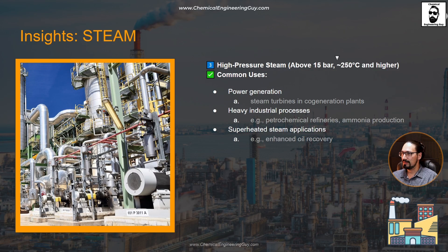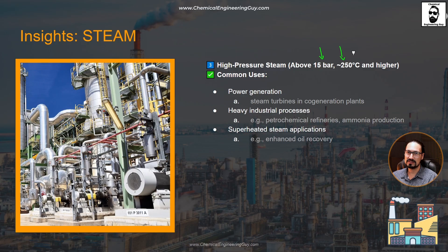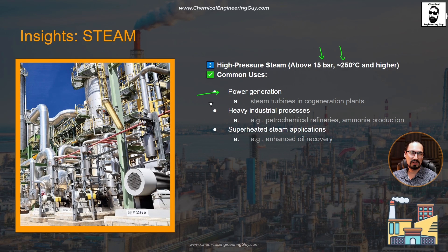Next, high pressure steam — high pressure and of course high temperature. Once again, this depends on the conditions of the industry, the processes, and the chemicals you're working with. This may certainly involve power generation, such as electric generators, though that is not typically considered a chemical industry.